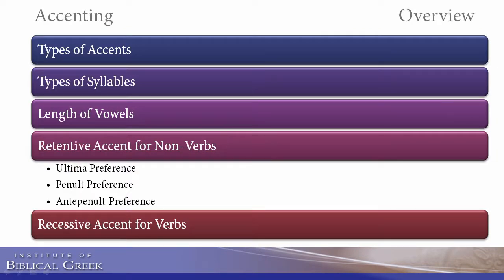Now we are ready to turn our attention to accenting real words, and we're going to start with non-verbs. The general principle for accenting non-verbs is retention. We're going to have words that are born with accents on their ultima, and they're going to want to stay there. The principle is retention — they want to retain their original placement. So we'll have some words with an ultima preference, some with a penult preference, and some with an antepenult preference.